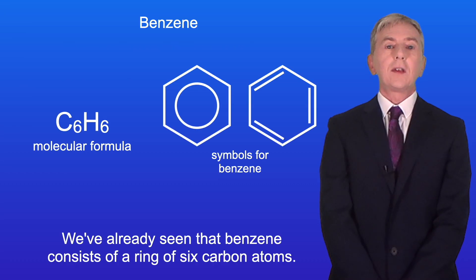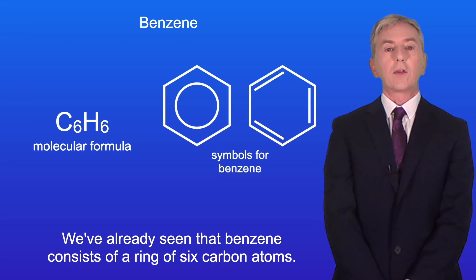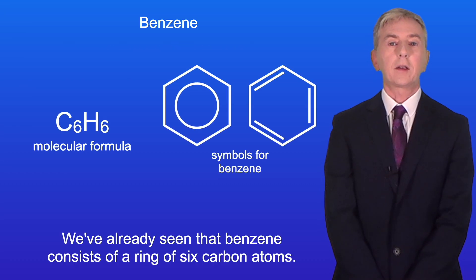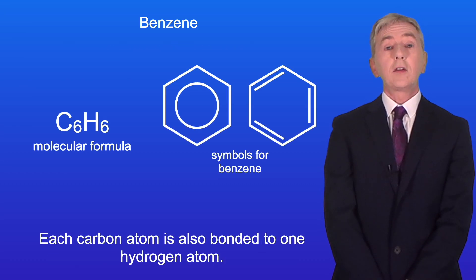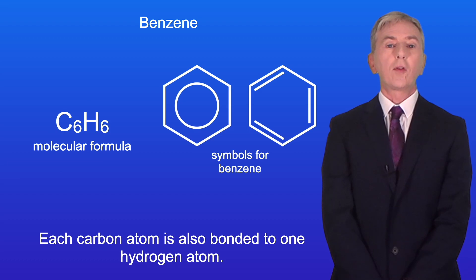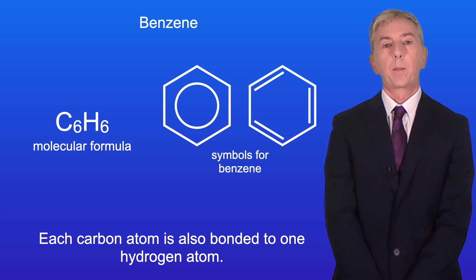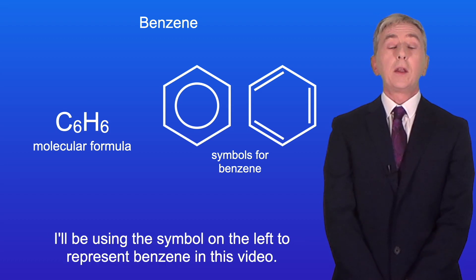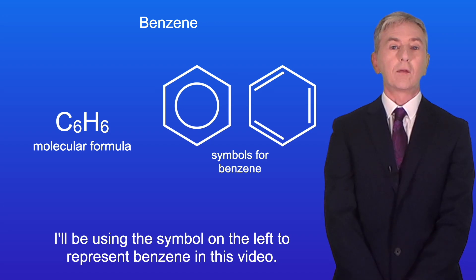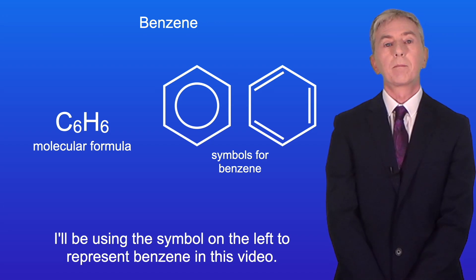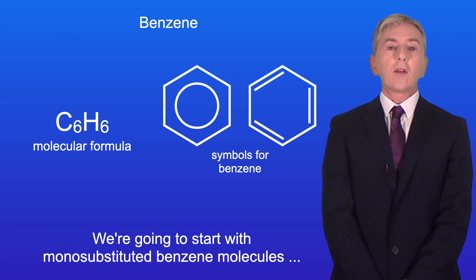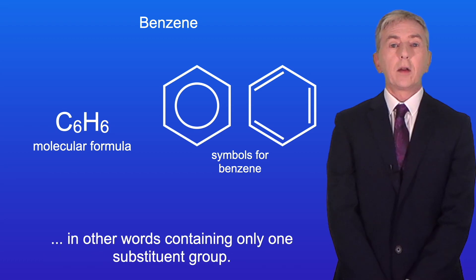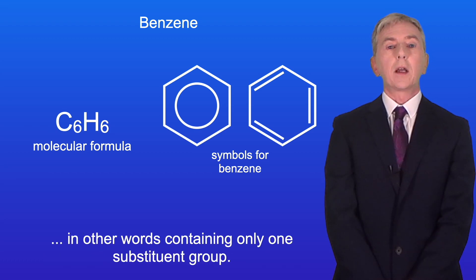We've already seen that benzene consists of a ring of six carbon atoms, and each carbon atom is also bonded to one hydrogen atom. I'll be using the symbol on the left to represent benzene in this video. We're going to start with mono-substituted benzene molecules, in other words containing only one substituent group.